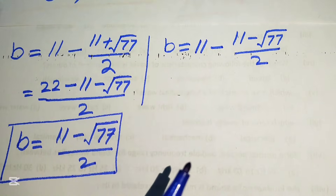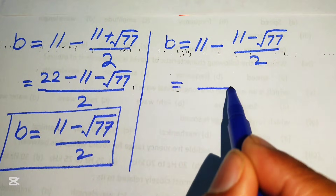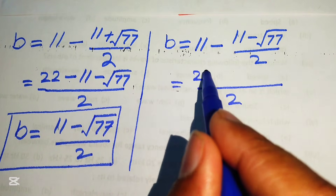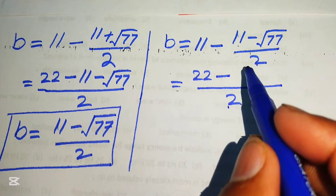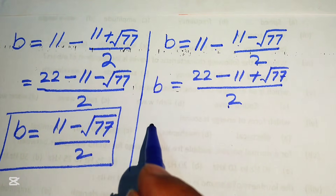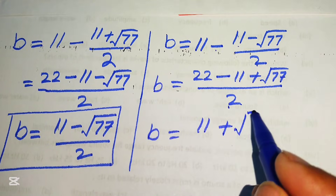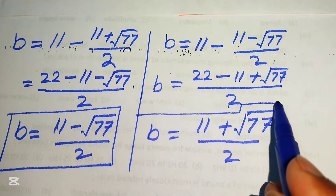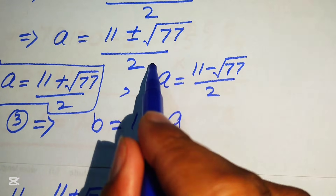Now we move to the second case. Here we substitute a equals to 11 minus square root of 77 divided by 2 into b equals to 11 minus a. Taking the LCM of 2, we get 22 minus the bracket 11 minus square root of 77, which gives us minus 11 plus square root of 77, so b equals to 11 plus square root of 77 divided by 2.